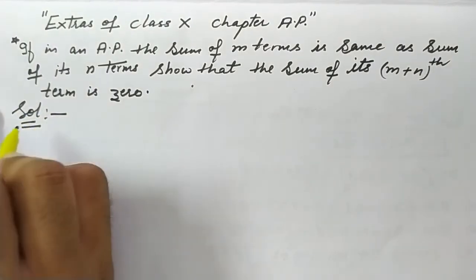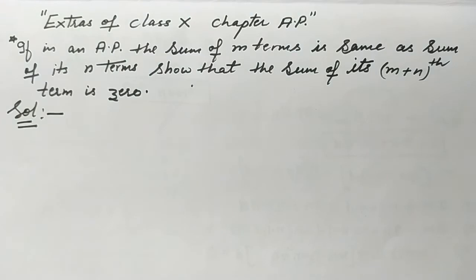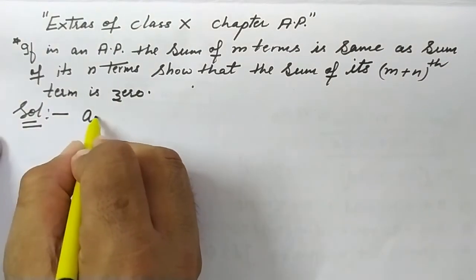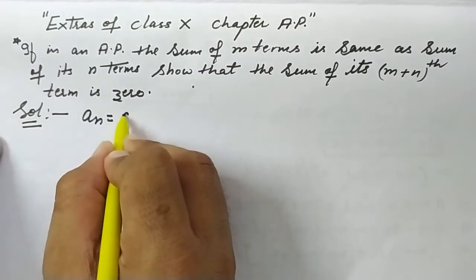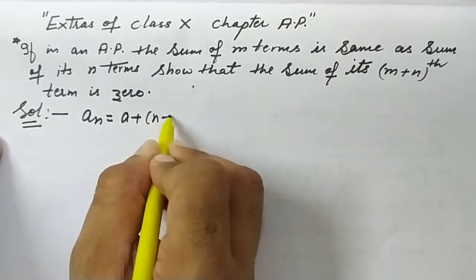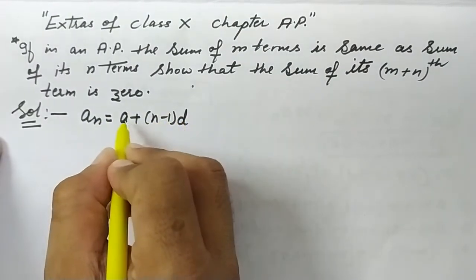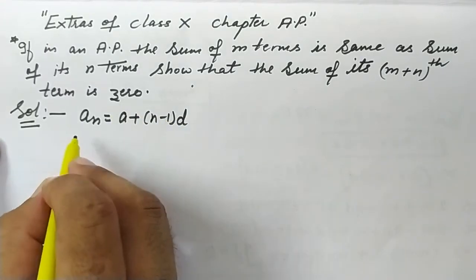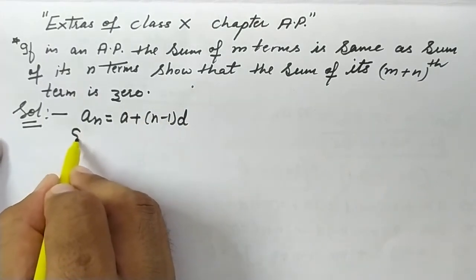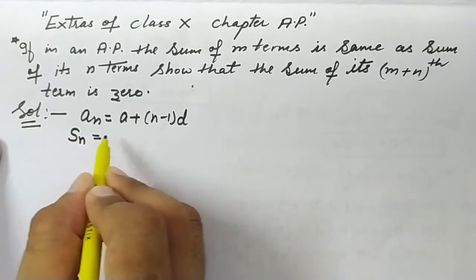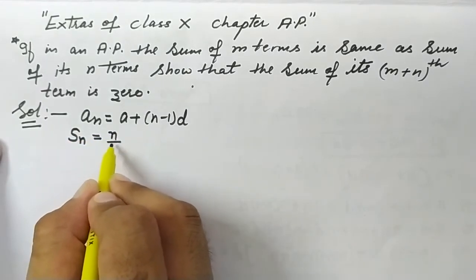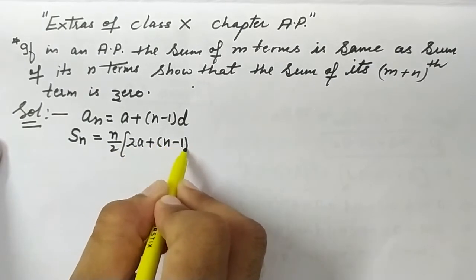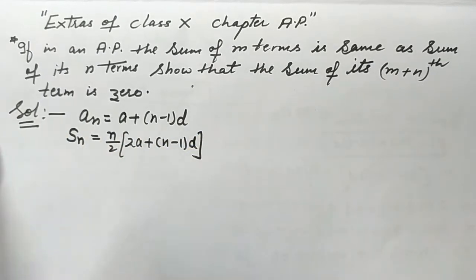Before solving these questions we should have two formulas. The first formula is to find the general term of an AP: aₙ = a + (n−1)d, where a is the first term and d is the common difference. The second formula is for finding the sum of n terms of an AP: Sₙ = n/2 × (2a + (n−1)d).